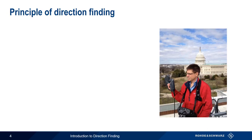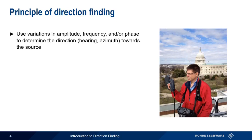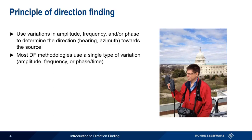So how do we determine the direction from which a signal is arriving, that is, the angle of arrival? There are three things that can change as a signal moves through space: its amplitude, its frequency, and/or its phase. Direction finding methodologies calculate bearings using location-based variations in the received signal. Most direction finding methodologies use a single one of these variations — that is, changes in amplitude, frequency, or phase/time to compute bearings.